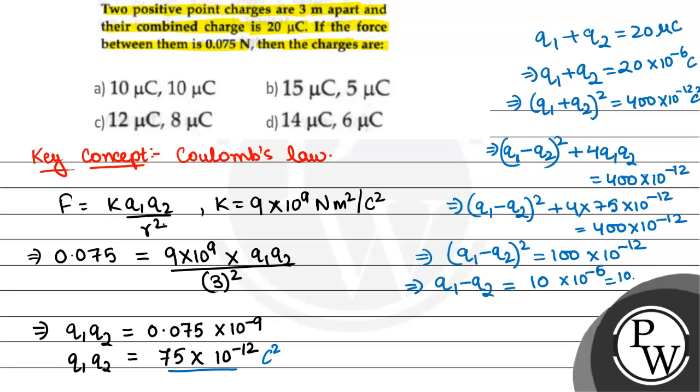Now we have two equations: Q1 plus Q2 is equal to 20 micro coulomb and Q1 minus Q2 is equal to 10 micro coulomb. So from here we get Q1 is equal to 15 micro coulomb and Q2 is equal to 5 micro coulomb. So the correct option would be option B. Hope you all understood it well, best of luck.